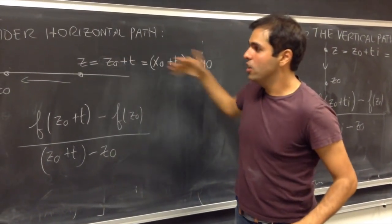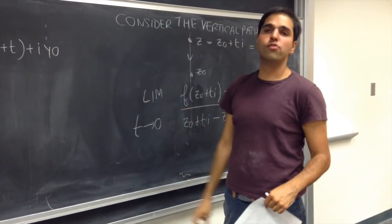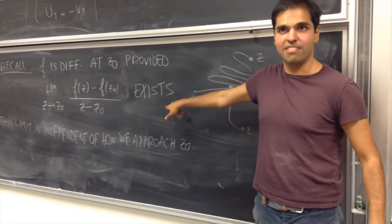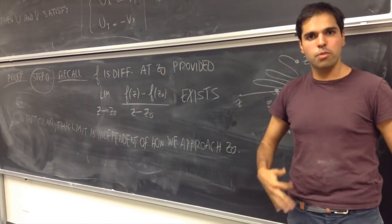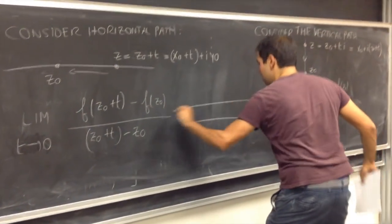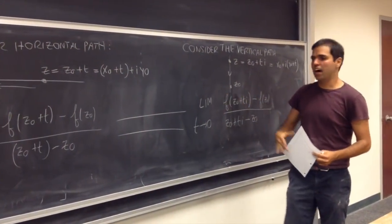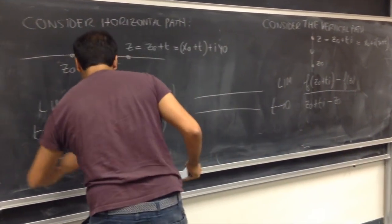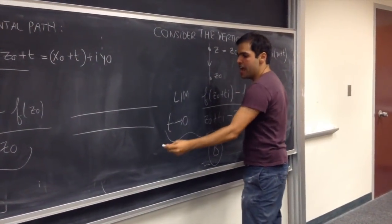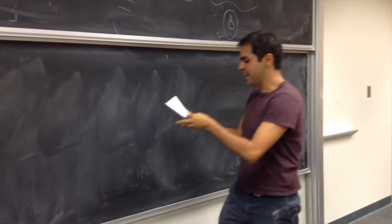Okay, what have we done? We have two paths — one the horizontal path, and one the vertical path — and we just calculated the derivative. But remember, this limit is independent of the path. Therefore, no matter how you approach z-naught, you get the same answer. Which means — and this is the most crucial part — those two limits are equal. The rest of the proof is just writing down what the two limits are. Let's call this a, and let's call this b, and we get a equals b.